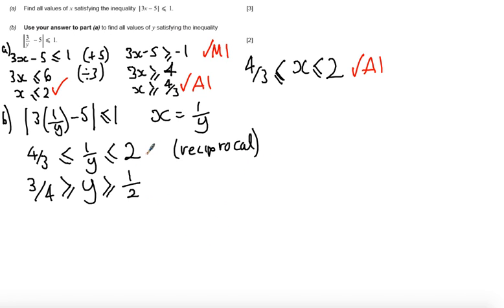For part B, if you've made the statement that 1 over y lies between 4 thirds and 2 you get a method mark. And if you've taken a reciprocal and correctly reversed the inequalities so that you get another bounded range for y, you get an answer mark. Okay, well I hope my solution made sense and that you was able to follow how to mark it.